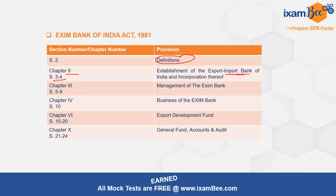Next is Chapter 4, covering Section 10, which deals with the business of the Exim Bank — all the business the bank is involved in. Next is Chapter 5, covering Sections 15 to 20, which talks about the Export Development Fund. This chapter covers the provisions related to how this fund is established, initiated by the Government of India, and is basically for providing financial assistance to support exporters, export-oriented businesses, and for the development of international trade.